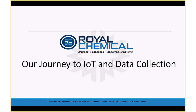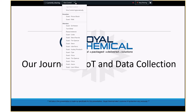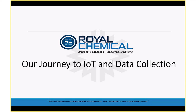My name is Dave Robinson. At Royal Chemical, we're a contract manufacturer. One of the things we've been trying to do for the past year and a half, two years, is understand the profitability and labor content of each of our lines. We run all different types of products and product lines and are trying to understand the variables in each one. It's never consistent, and we want to know the utilization for each machine and our labor — how it's being used for each job.